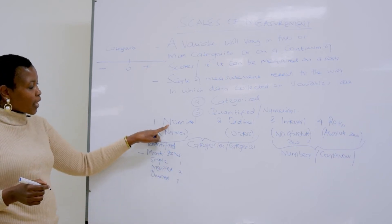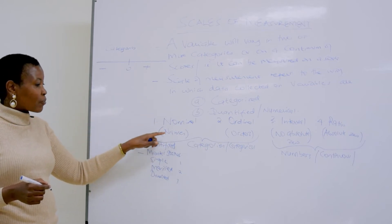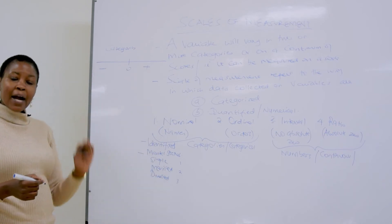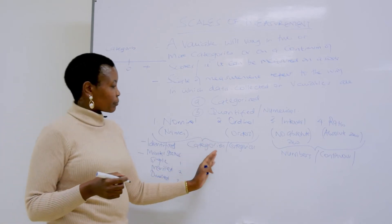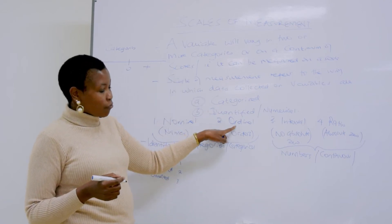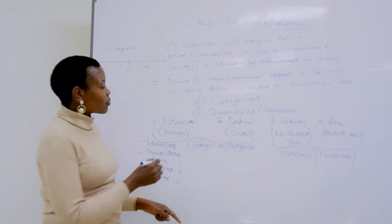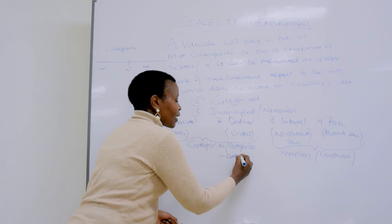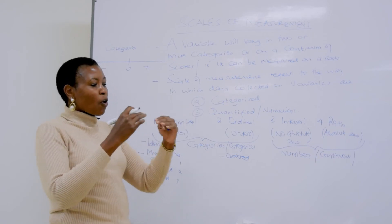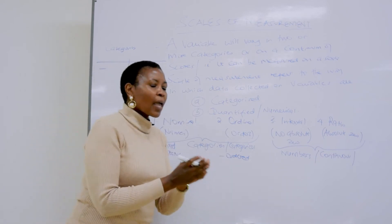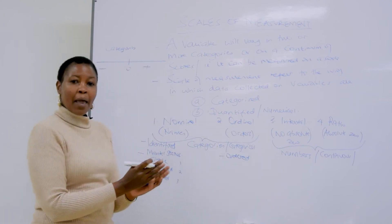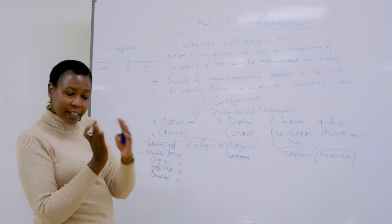So at the nominal scale, the variables are used for identification only — they only name the variable. Any number attached to them carries no quantitative value. Then we move to ordinal. Ordinal has some order. This scale measures variables that have values that have been ordered, from either high to low or low to high. There is some order according to quantity, but the differences between these levels are not equal.